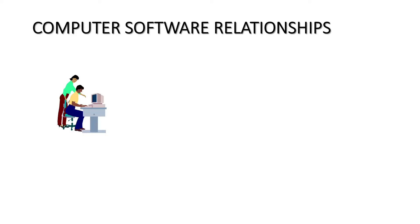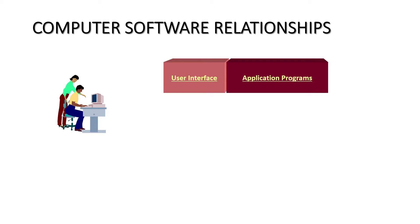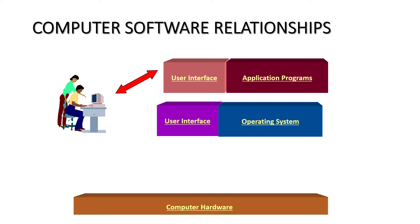We can see in the diagram how exactly the relationship between the user and the software in a computer works. The user interacts through the user interface, through application programs, which interact with the operating system — that is the system software — and then it interacts with the computer hardware.